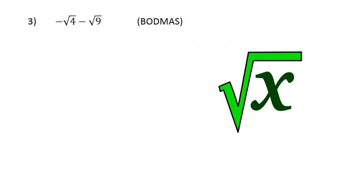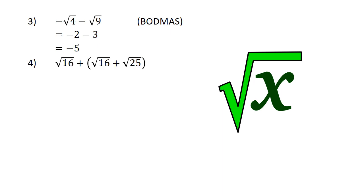Negative square root of 4 minus square root of 9 equals negative 2 minus 3, which is equal to negative 5.